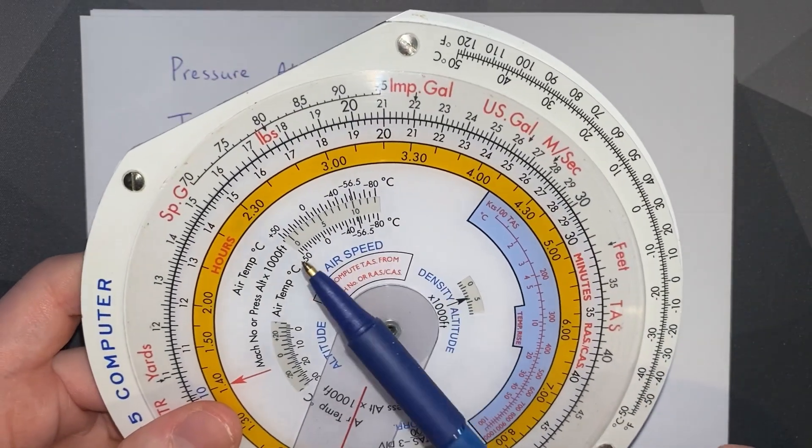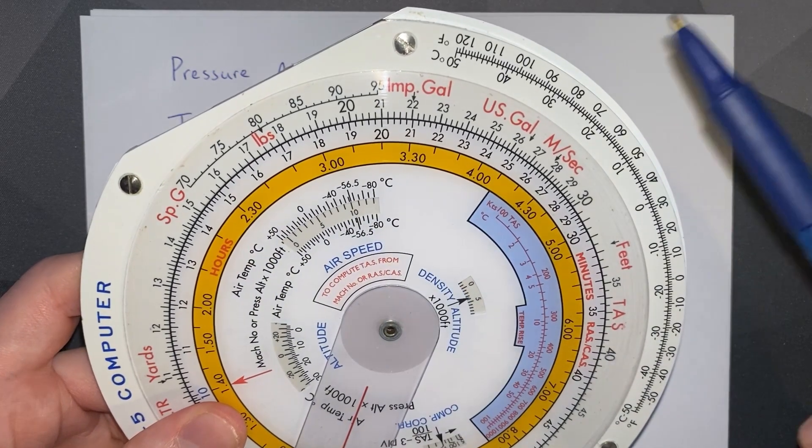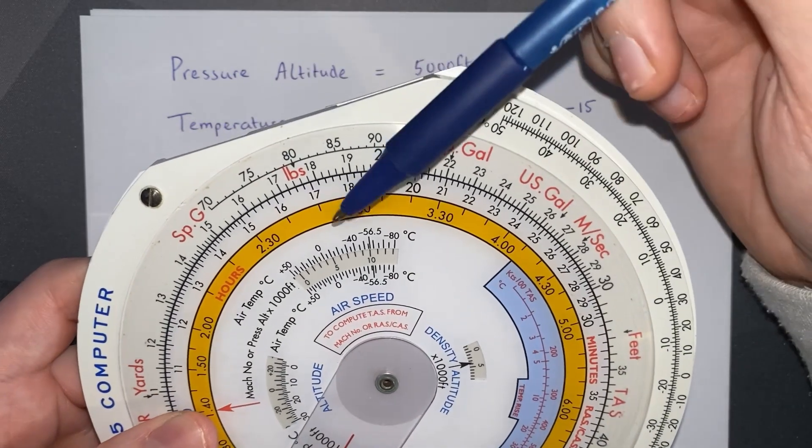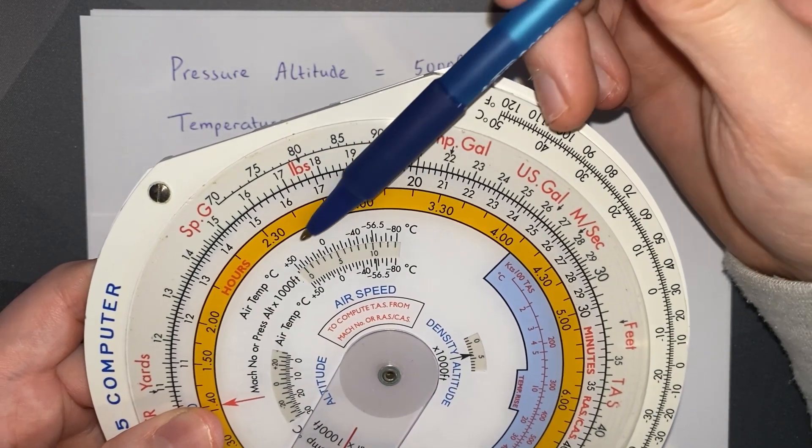On our airspeed window, we can plot our pressure altitude on the inner scale and the temperature on the outside scale, making sure to note that the temperatures are negative to the left and positive to the right.